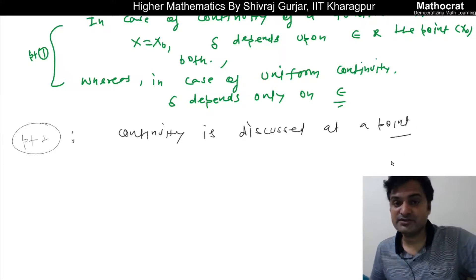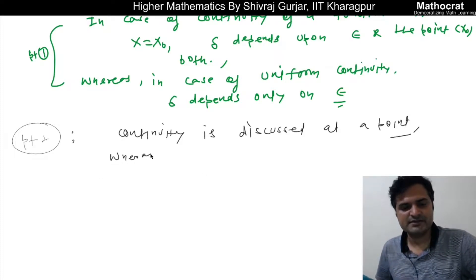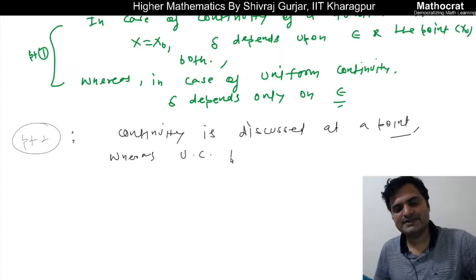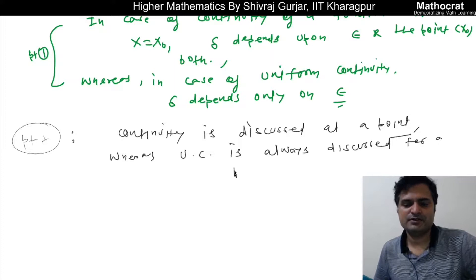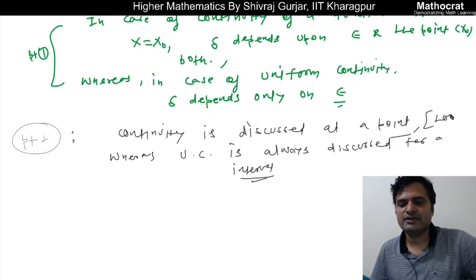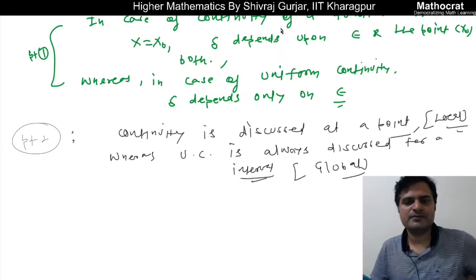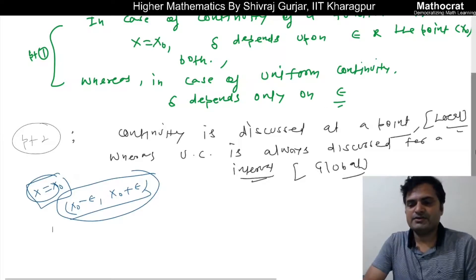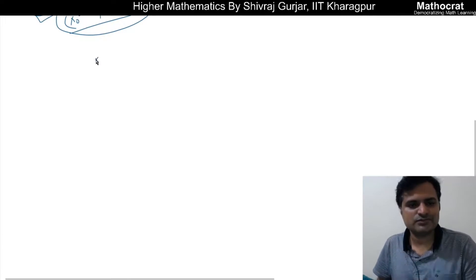Continuity is discussed at a point, whereas uniform continuity is always discussed for an interval — in an interval we discuss it. So basically we can say that continuity is a local phenomenon, whereas uniform continuity is a global phenomenon — global in the sense of the interval. So this is the key difference.